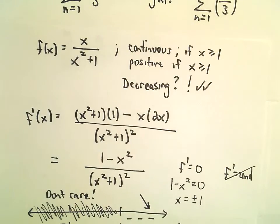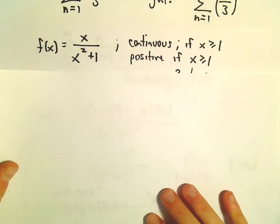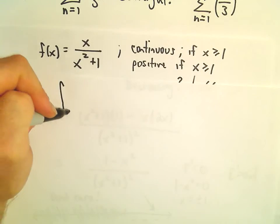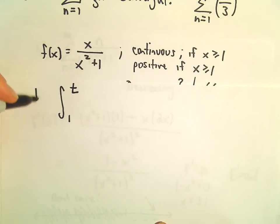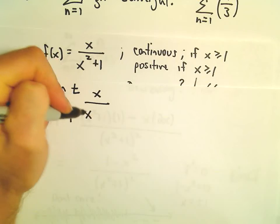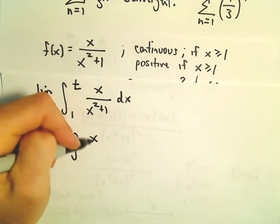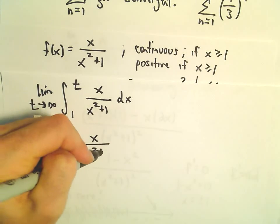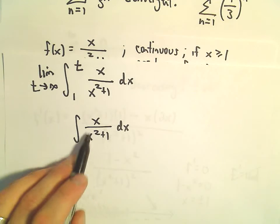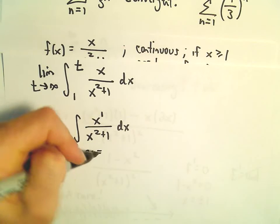So that means we can now use the integral test. So again, our series started at 1, so we're going to integrate from 1 to infinity, but I'm going to go ahead and replace that with a t and do the limit as t goes to infinity of x over x squared plus 1. Now, I'm just going to integrate this off to the side, and then we'll stick the limits and everything back in there. So to integrate x over x squared plus 1, well, I see something squared and I see something to the first power. That makes me think u substitution.